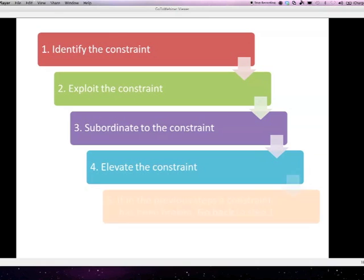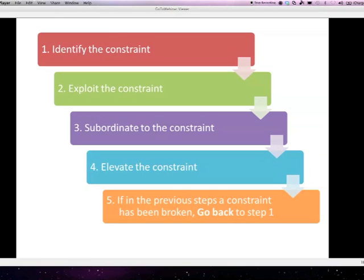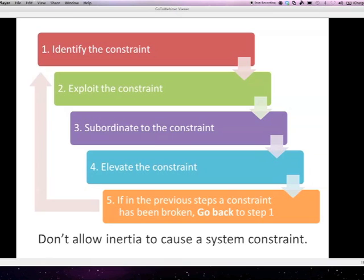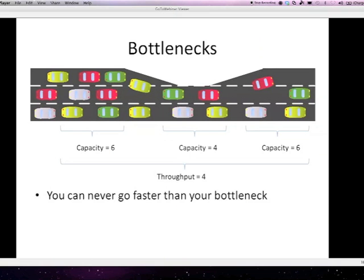And then you basically just step back to step one and you start over. And it's very important that you keep doing this and don't allow inertia to just keep going and you will not really improve your process. So how would we, if we go back to the traffic situation again, and we have, in this case, a constraint.